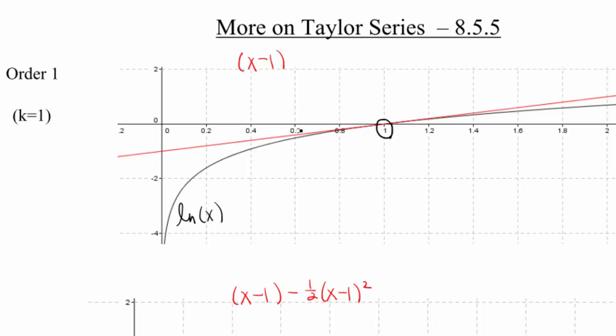So you notice right around 1, our approximation is actually really good, right? My red line comes really close to my function ln(x). It's only until we get about 0.4, 0.6 away, do these two pieces start to separate.